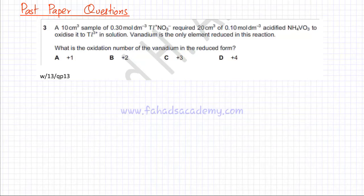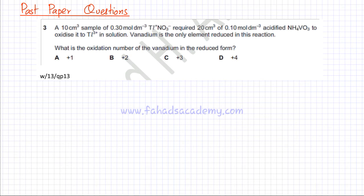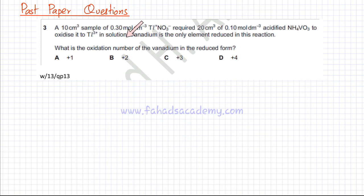In this video lecture, I'm going to try and solve a few possible questions related to moles and stoichiometry, but involving redox reactions. The question is an MCQ stating that there's a 10 cm³ sample of 0.3 mol per dm³ Tl⁺NO₃⁻ compound, which required 20 cm³ of 0.1 mol per dm³ acidified ammonium NH₄VO₃ to oxidize it to Tl³⁺ in solution, and vanadium is the only element that is reduced in the reaction.